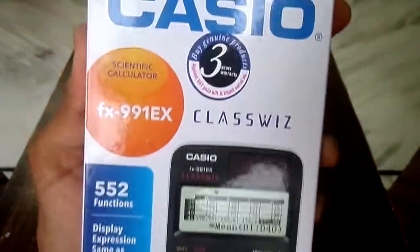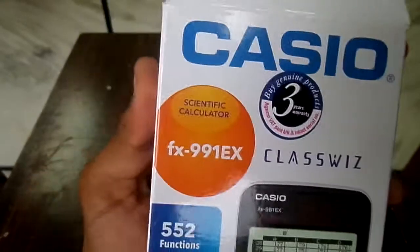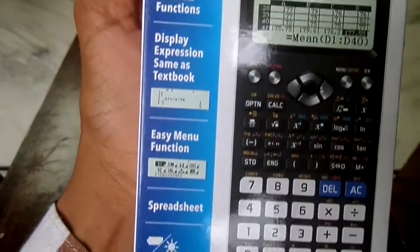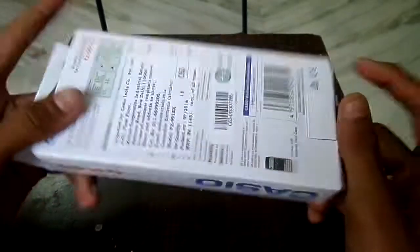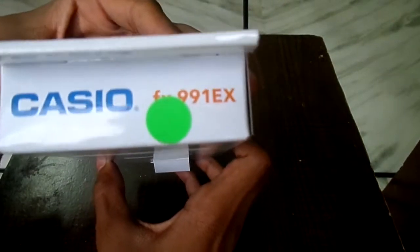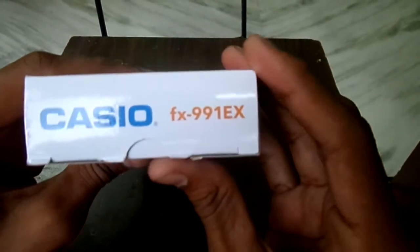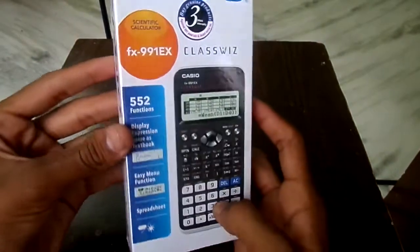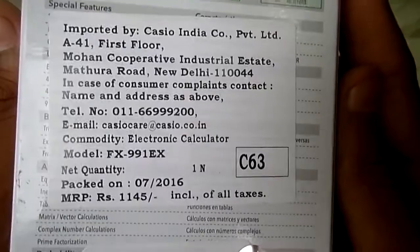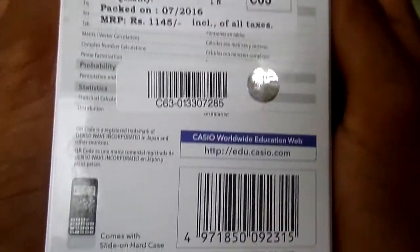It is Casio FX991EX product. It has 552 function keys and a 3 years limited warranty service. The major difference between this Casio and other models is its resolution, and the four sides of the box are covered with Casio FX991EX logo.